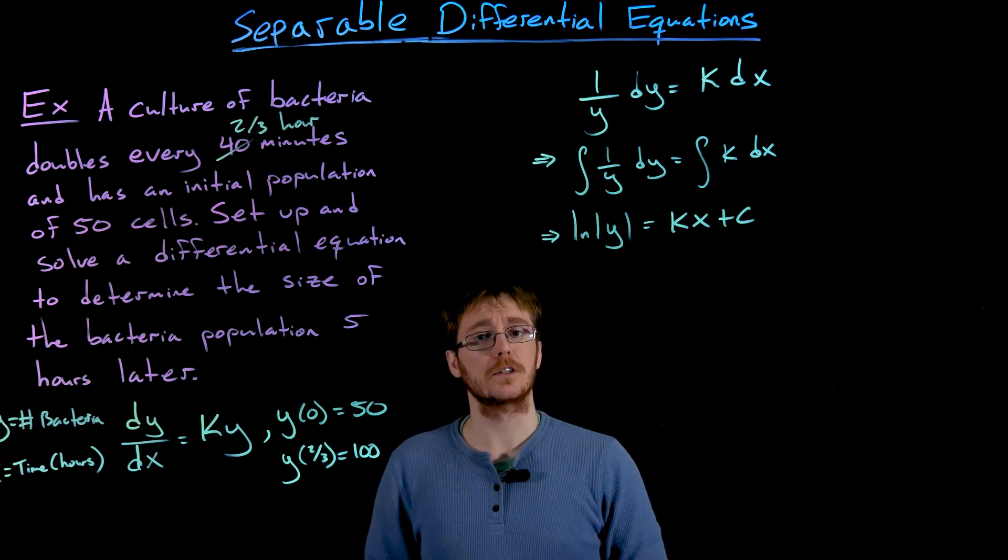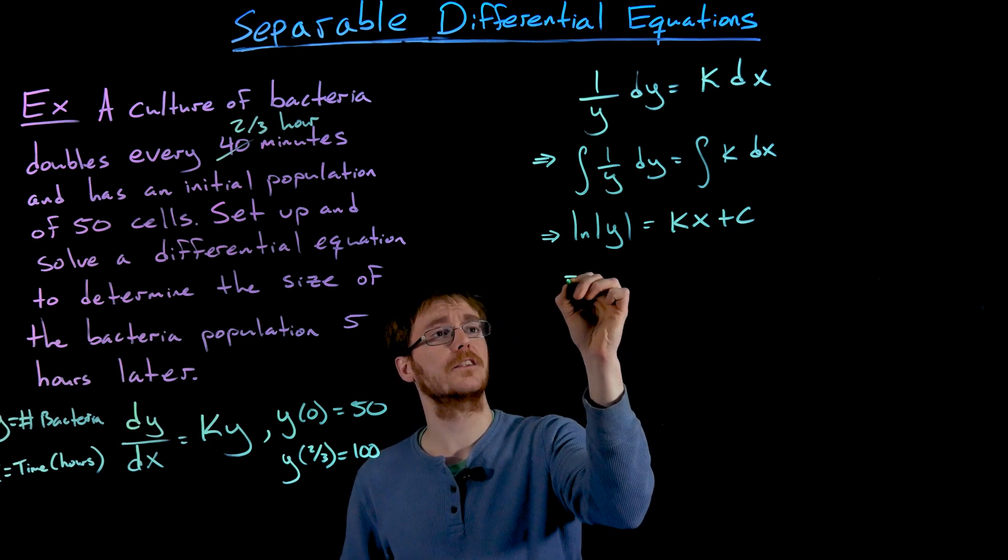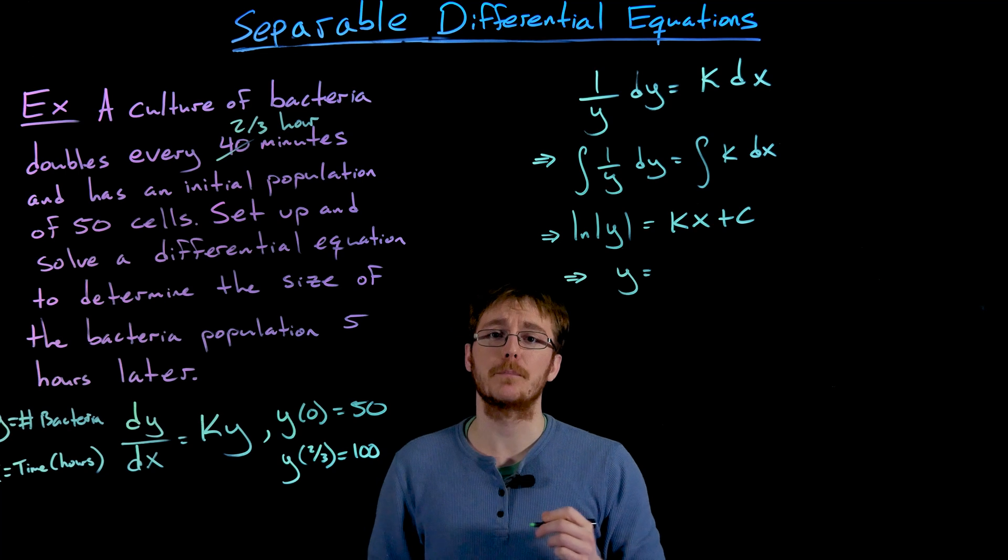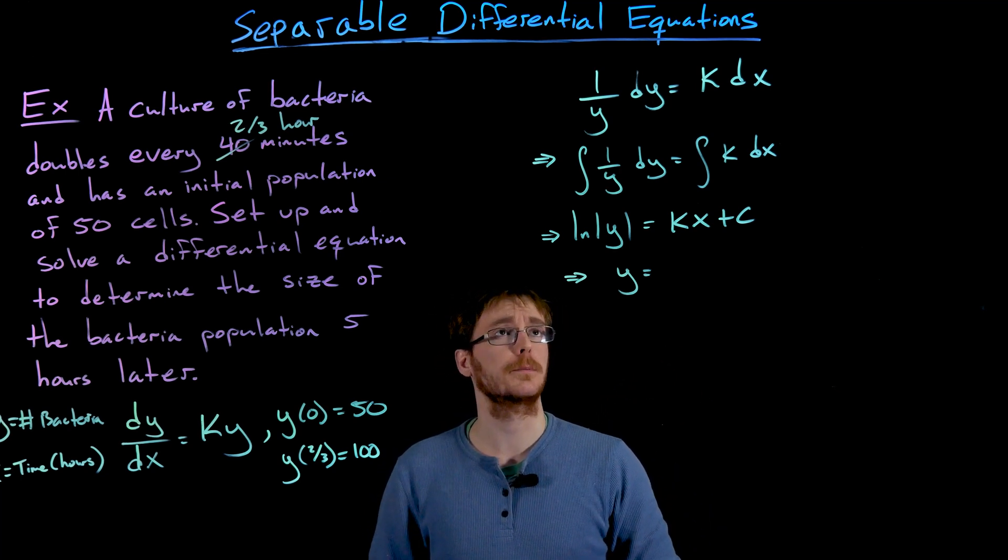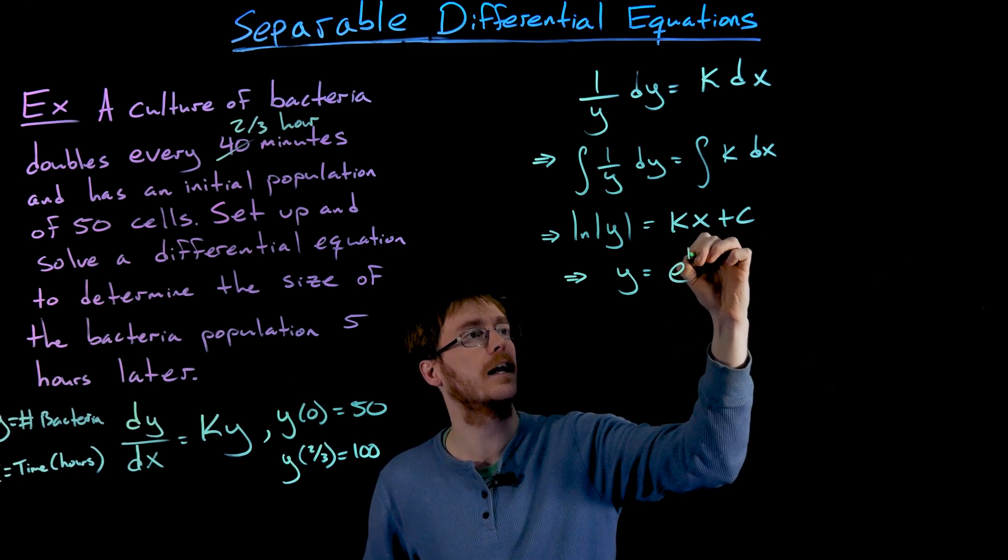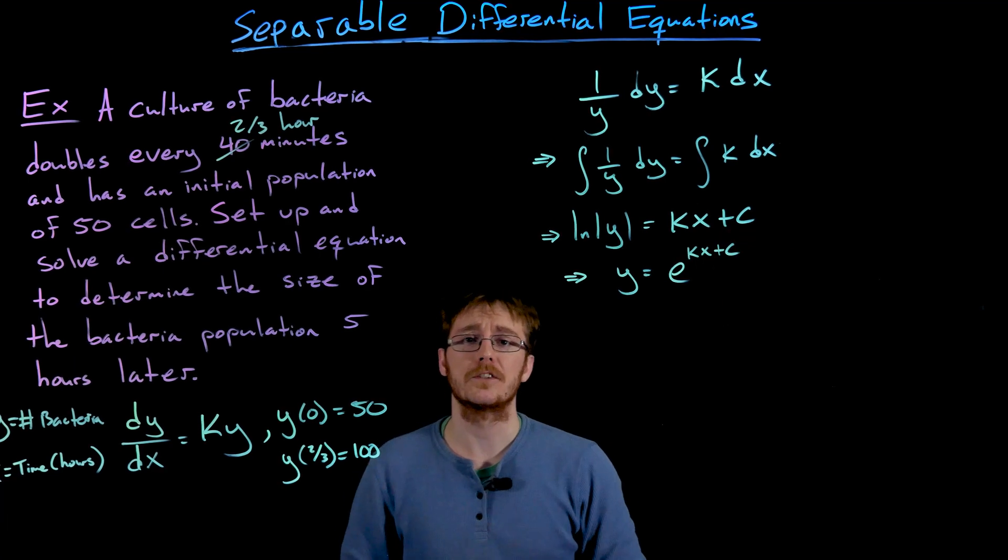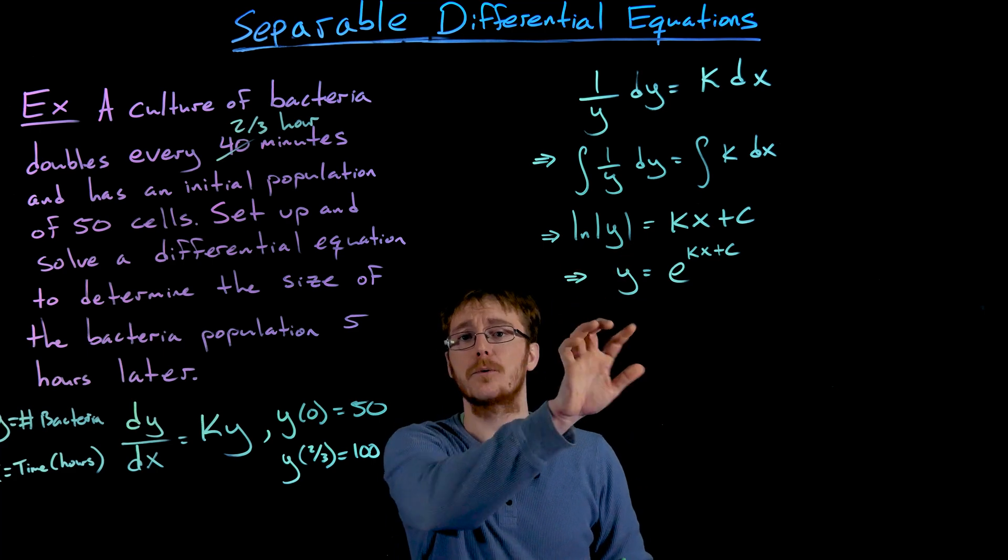And now this general solution to our differential equation is written in this implicit form. We can solve this explicitly for y in terms of x just by exponentiating both sides or rewriting this equation from its log form to its exponential form. And that's going to tell us that y is equal to e to the power of the right-hand side, k times x plus c. And so there is a little bit of funny stuff we're doing here. We're dropping this absolute value along the way. So really this could be plus or minus this exponential,